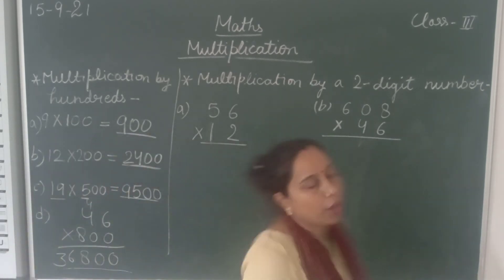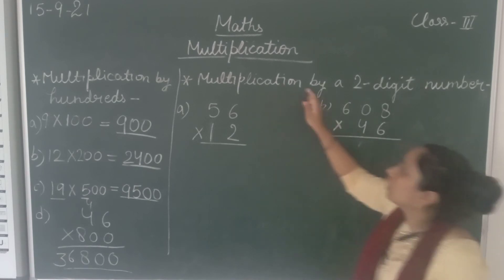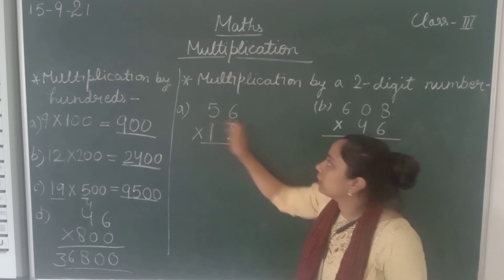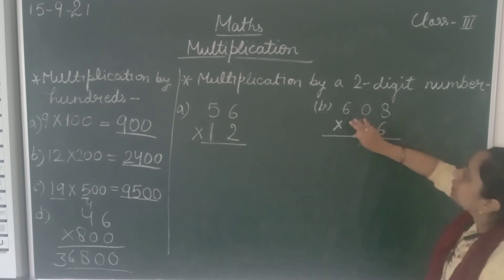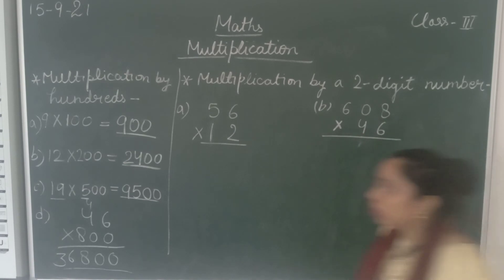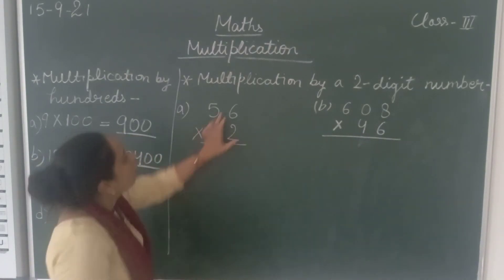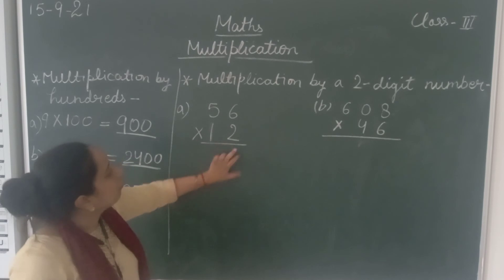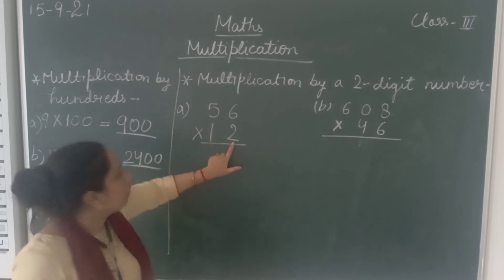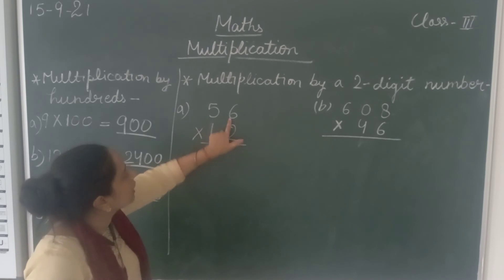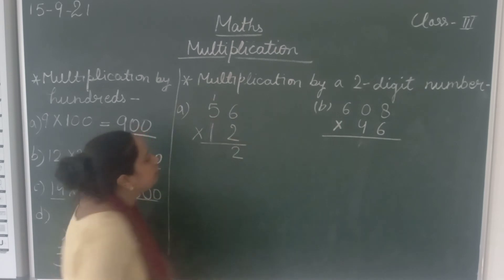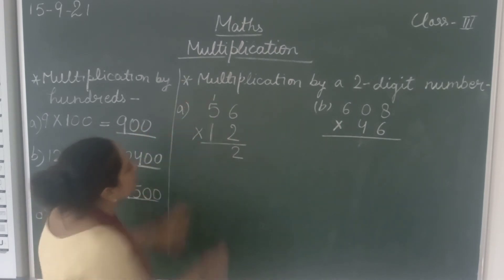Now let's move to the next topic: multiplication by a 2-digit number — how to multiply a 2-digit number by a 2-digit number, and also a 3-digit number by a 2-digit number. First, we will multiply 56 by 2, the ones digit. So 2 sixes are 12. Write 2, carry 1. Then 2 fives are 10, plus 1 is 11.